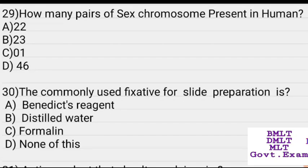How many pairs of sex chromosomes are present in humans? Answer: 1 pair.